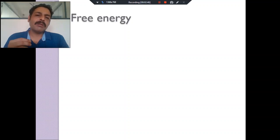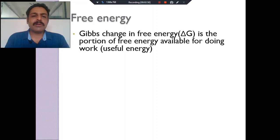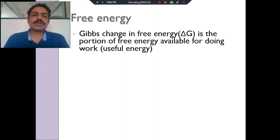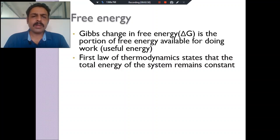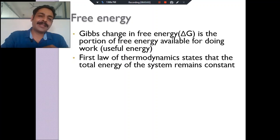What is free energy? Free energy means the energy which is available to do activity. It is given by one scientist called Gibbs, so we call it Gibbs free energy — delta G — that is the portion of energy available to do work. There are two laws of thermodynamics. The first law states that energy can be neither produced nor destroyed.